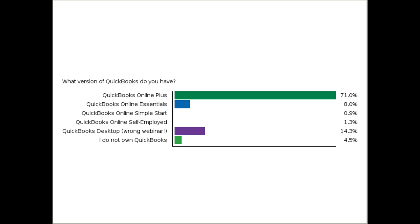We did a desktop webinar like this, but you're already here and the techniques you use to enter transactions are the same regardless of whether you're in the desktop or not, so hang out. It's very important to have the Plus version because that's the one that allows you to do budgeting. If you don't know what you have, let me share my screen real quick. If your screen looks like the desktop version when you're in QuickBooks, you're in the wrong webinar — but hang out, the techniques are the same. This is the Online Edition.